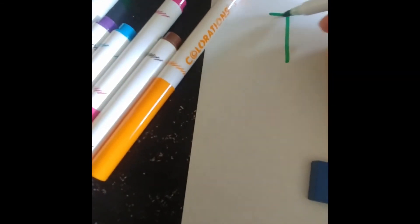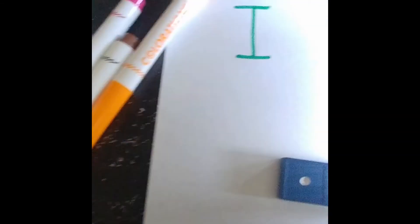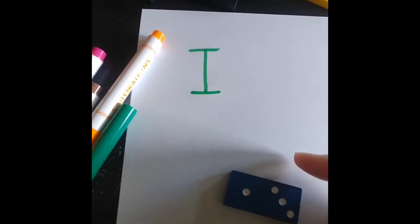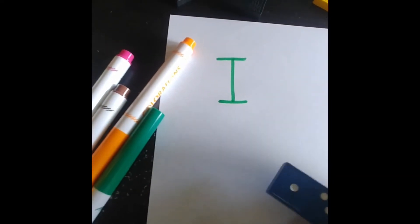So you take your green marker and I want you to write your name. Mine starts with an I. So I write a capital letter I, in this case, in green. And you need to remember, when you write your name, always start with a capital letter.